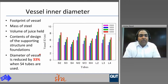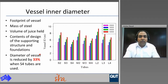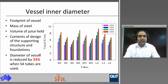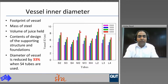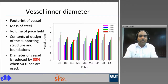The vessel inner diameter is an important parameter as it determines the footprint of the vessel, the mass of steel, the volume of juice held in the vessel, and the requirements for supporting structure and foundations. The diameter is reduced by 33 percent when small diameter 4 meter length tubes are used compared to medium diameter 2 meter length. For example, for 5,000 square meter heating surface area, the vessel inner diameter is 9 meters for M2 tube dimensions and is reduced to around 6 meters when small diameter 4 meter tubes are used.